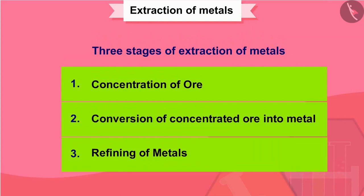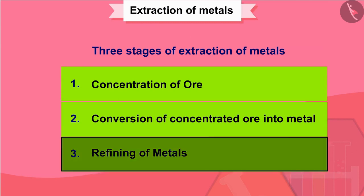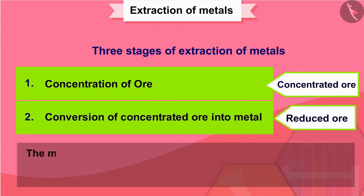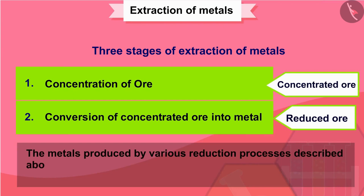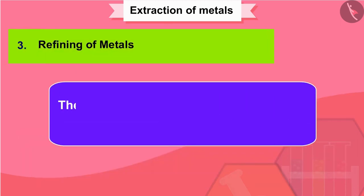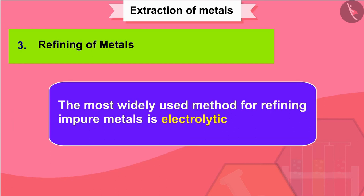Let us now move to the last point of this extraction process, which is refining of metals. The metals produced by various reduction processes described above are not very pure. They contain impurities, which must be removed to obtain pure metals. The most widely used method for refining impure metals is electrolytic refining.